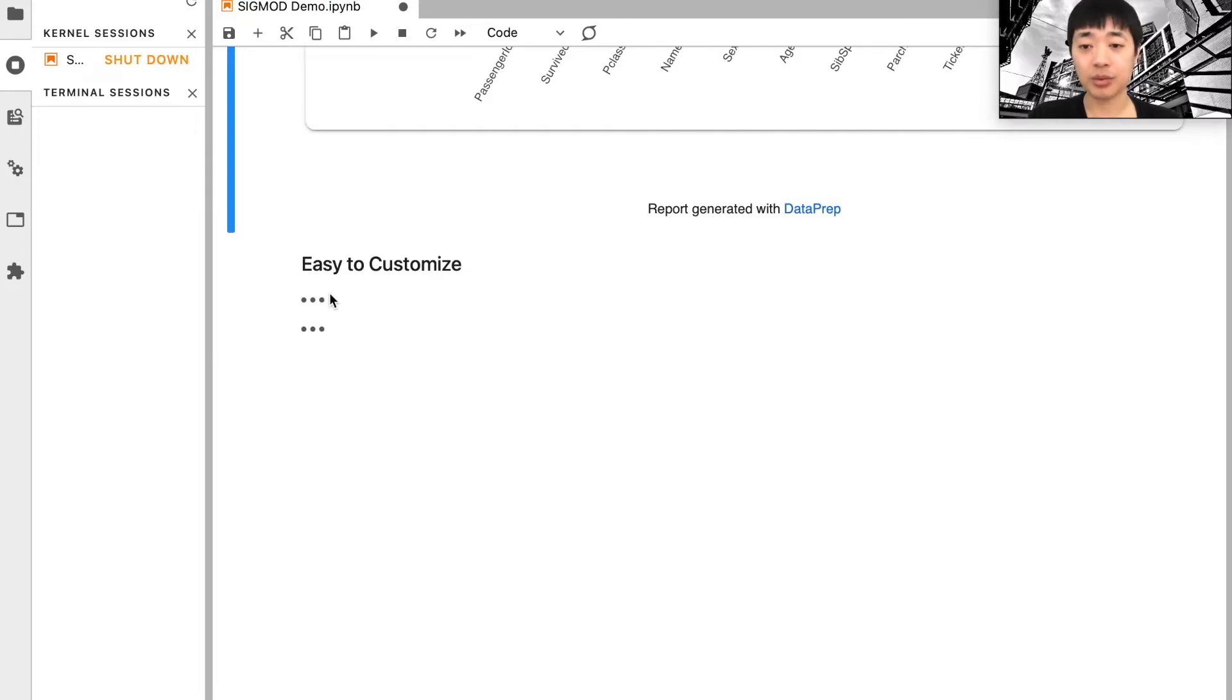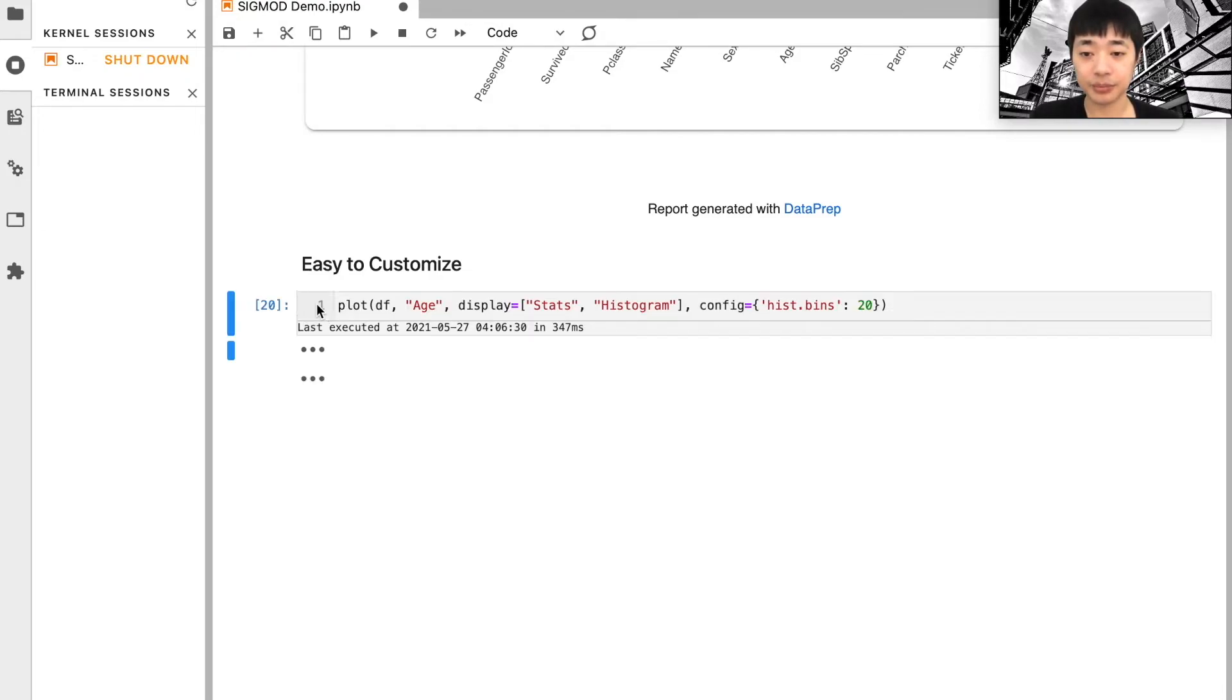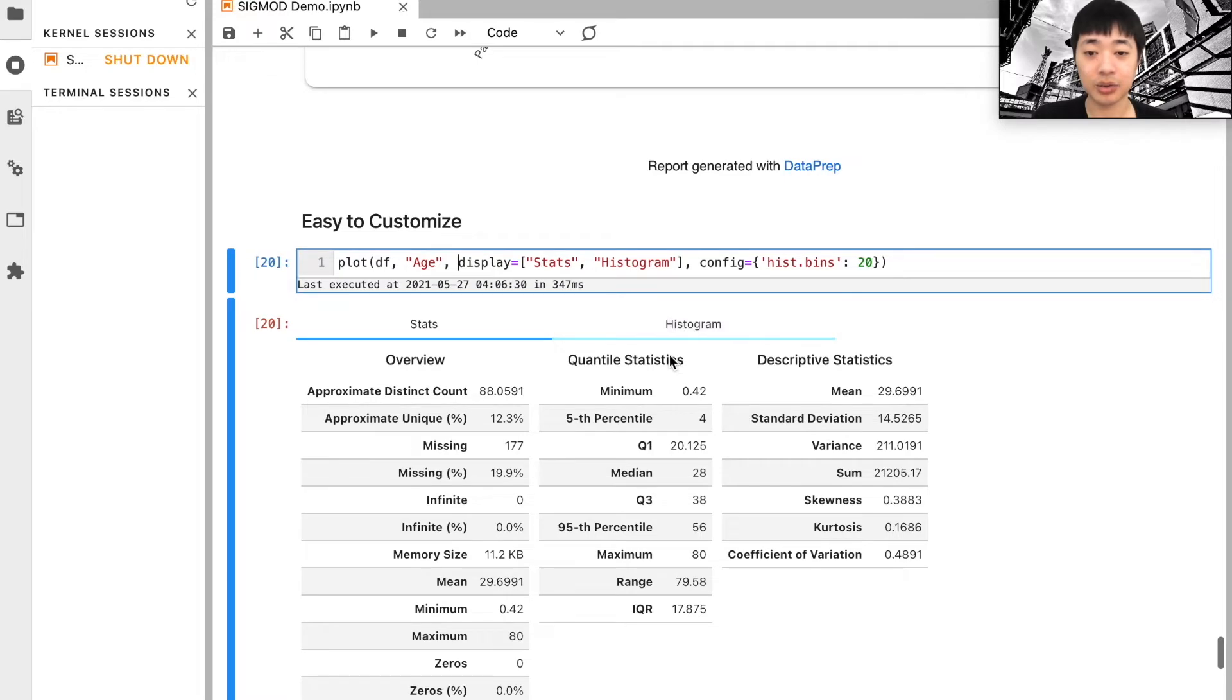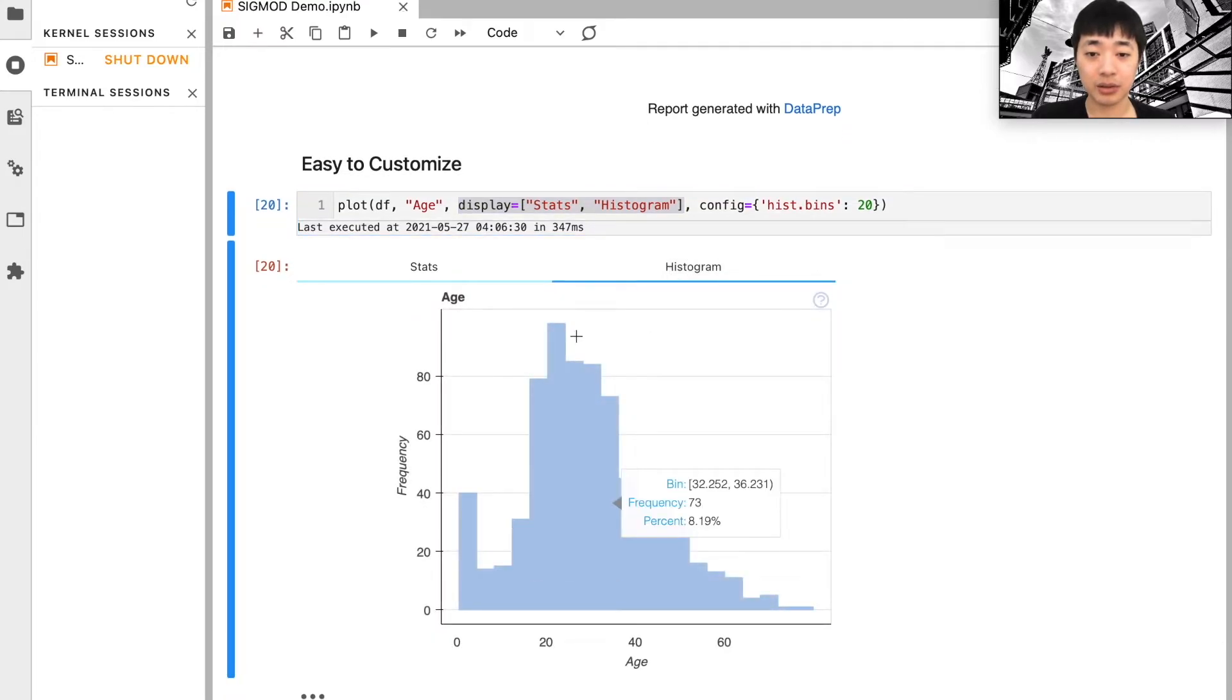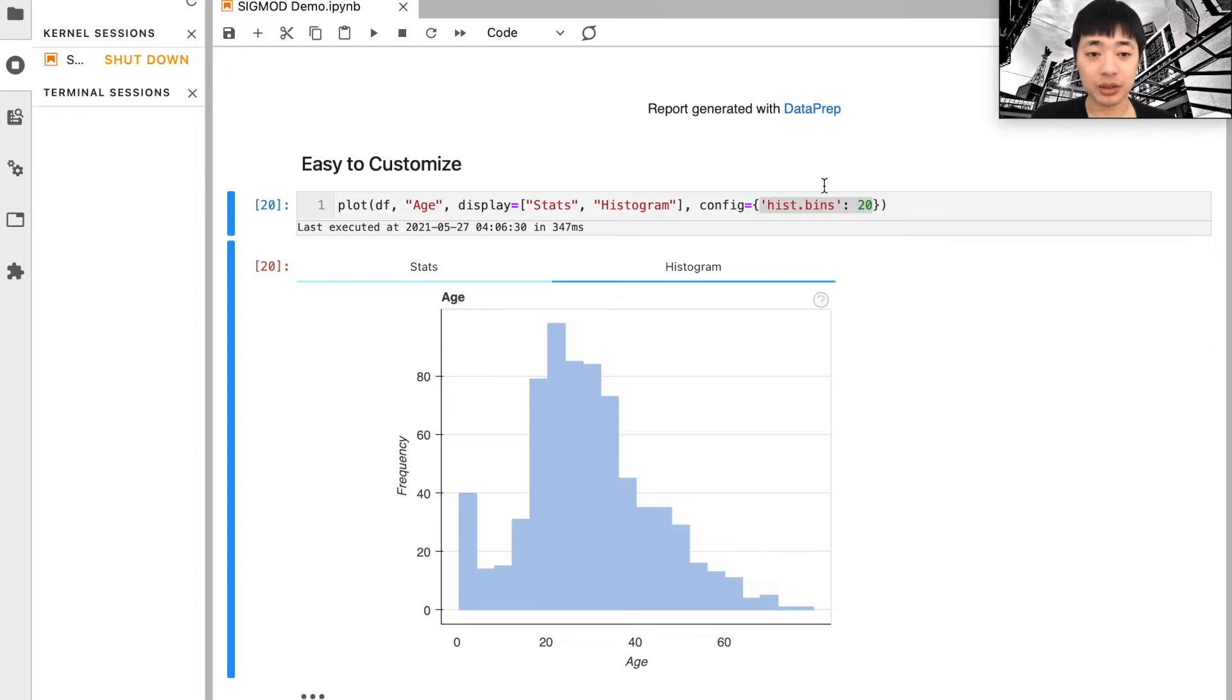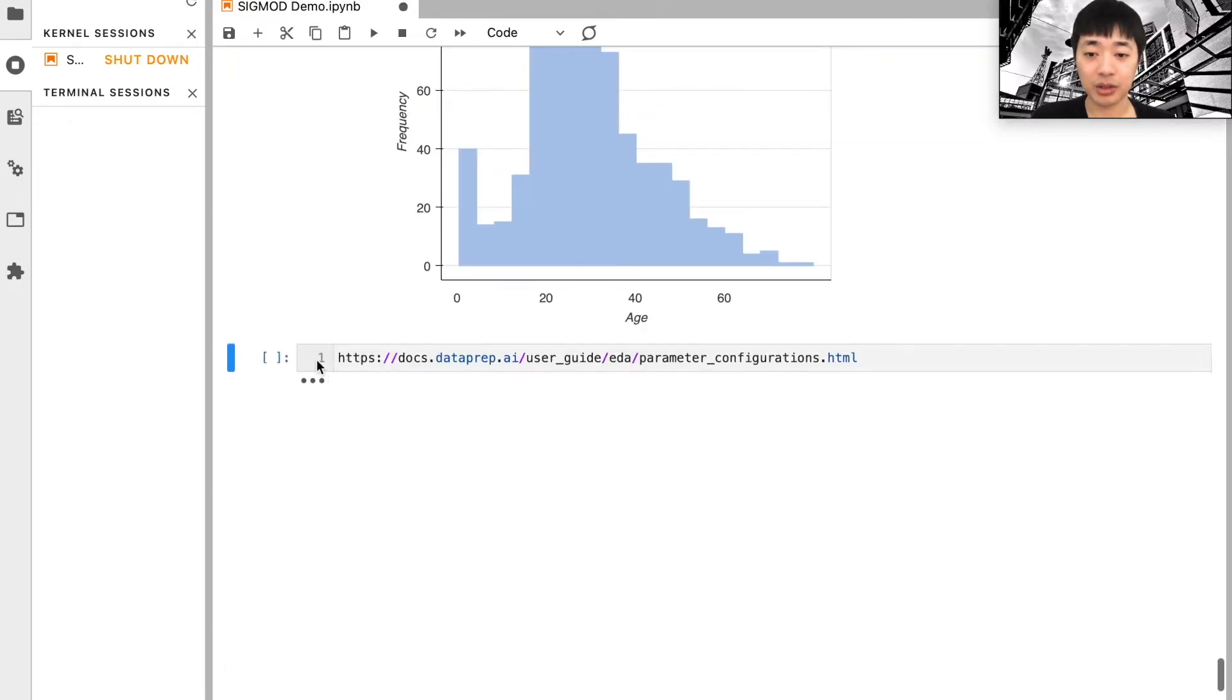Next I'm going to show you how easy it is to customize the plot function. We'll take the plot_df(height) as an example. First, I'm going to allow that only stats and histograms can be shown in the result visualization. You can do this by specifying the display argument here. You can also customize the histogram bins by using the config parameter. The values inside the config parameter can be obtained from the question mark here. You can also see all the configurations in our documentation with this link. That's all for the demo. Thanks for listening.